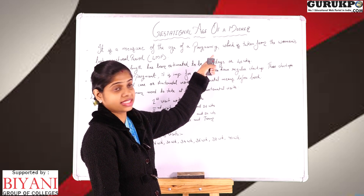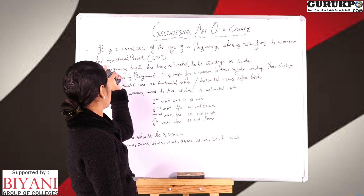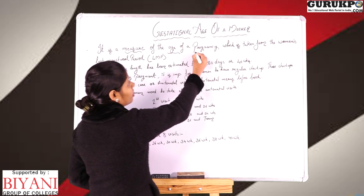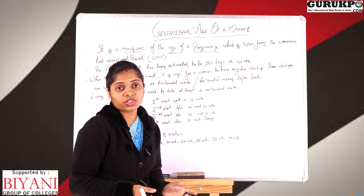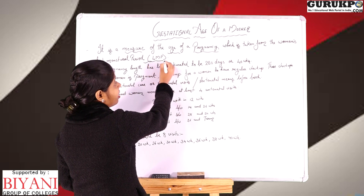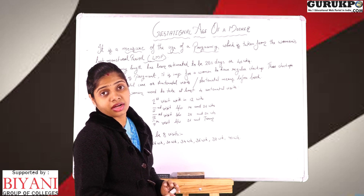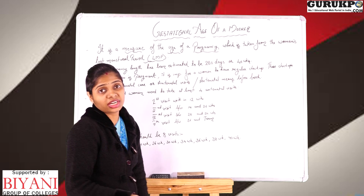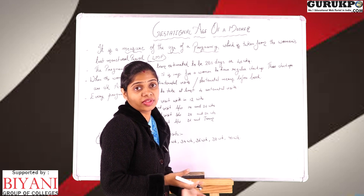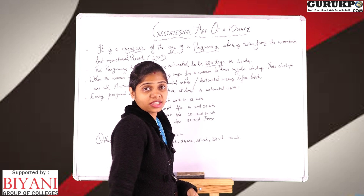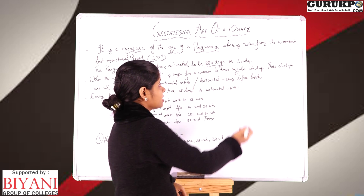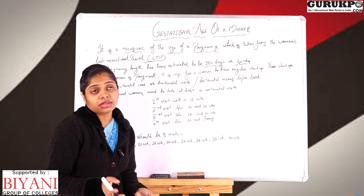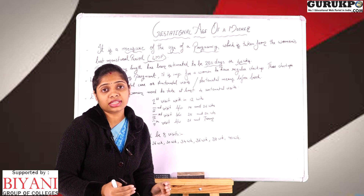Gestational age is the measure of the age of the pregnancy, which is taken from the woman's last menstrual period. The total length of pregnancy is estimated to be 280 days, or in terms of weeks, 40 weeks. The gestational age of the mother is taken during the antenatal period.